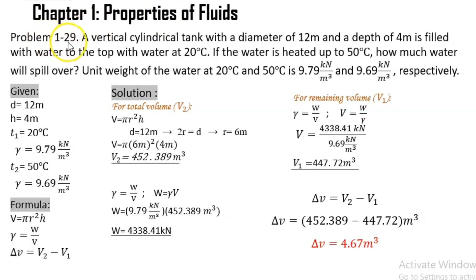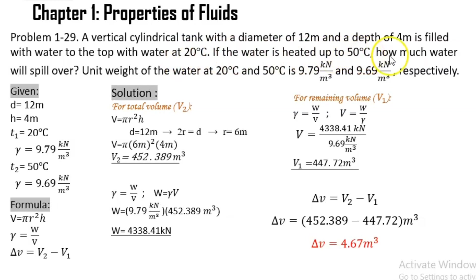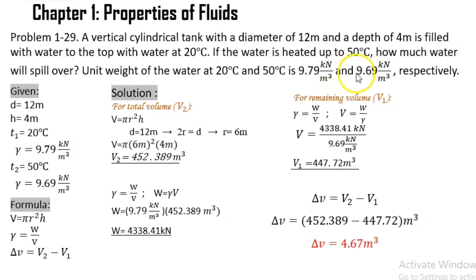Here we have Problem 1-29. A vertical cylindrical tank with a diameter of 12 meters and a depth of 4 meters is filled with water to the top at 20 degrees Celsius. If the water is heated up to 50 degrees Celsius, how much water will spill over? The unit weight of water at 20 degrees Celsius and 50 degrees Celsius is 9.79 kN per meter cube and 9.69 kN per meter cube, respectively.